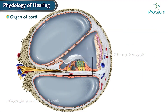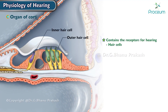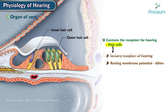The organ of Corti contains the receptors for hearing: hair cells. Hair cells are the sensory receptors of hearing. The resting membrane potential of the hair cells is about -60 millivolts. Hair cells have a motor protein, namely prestin.